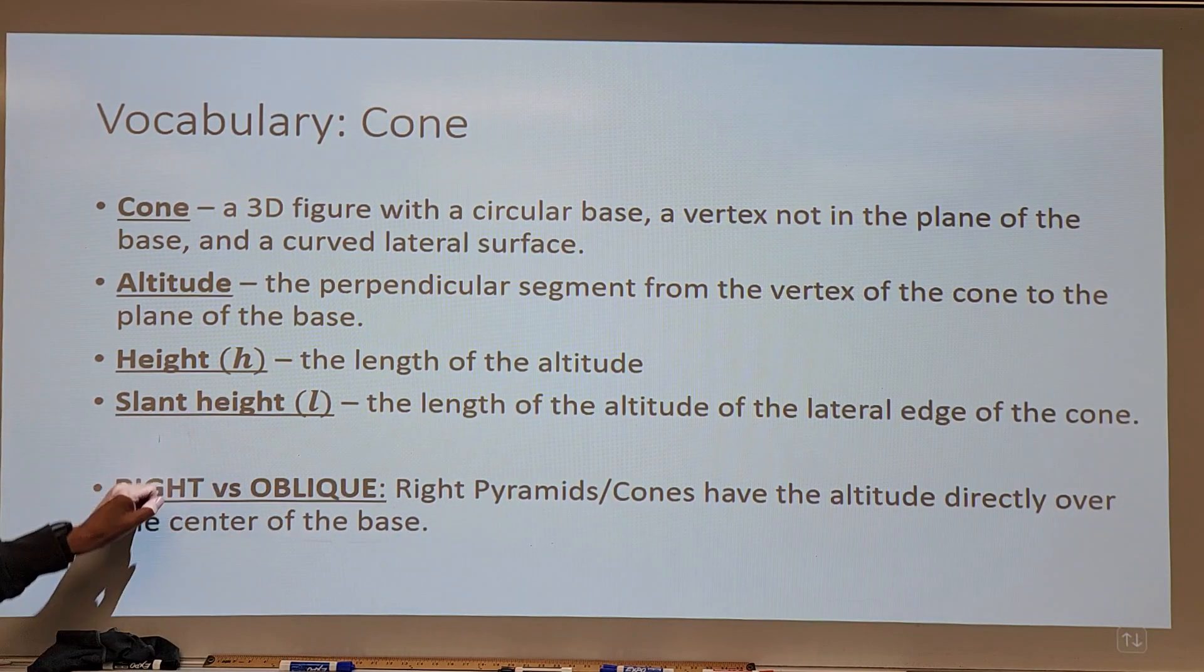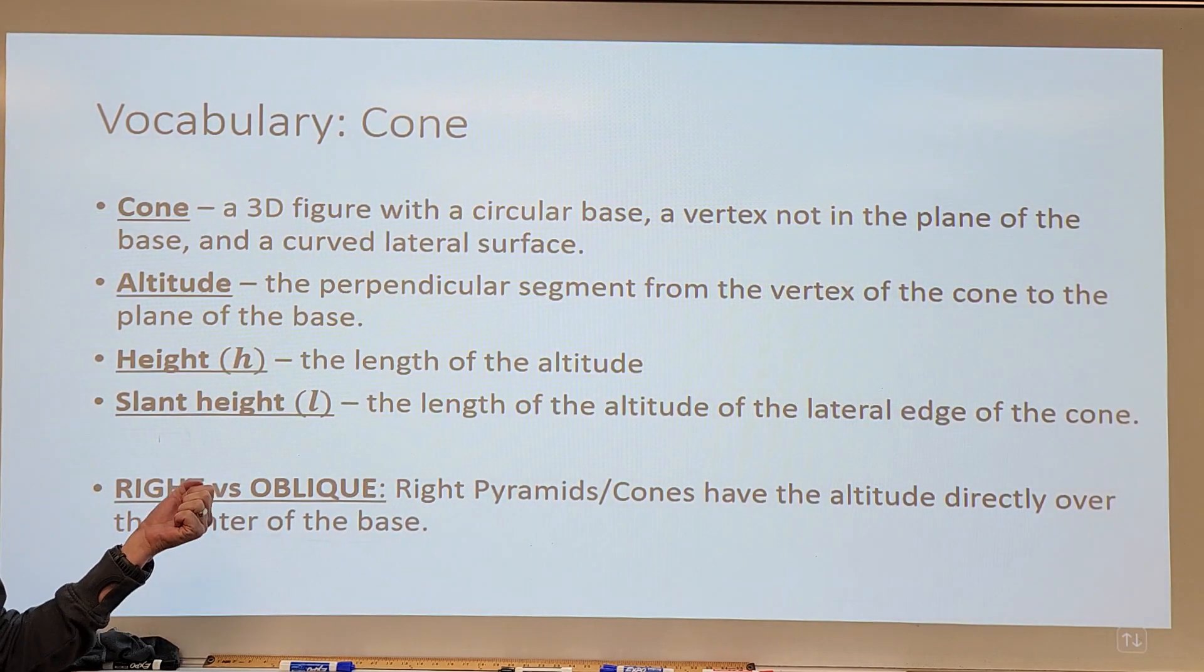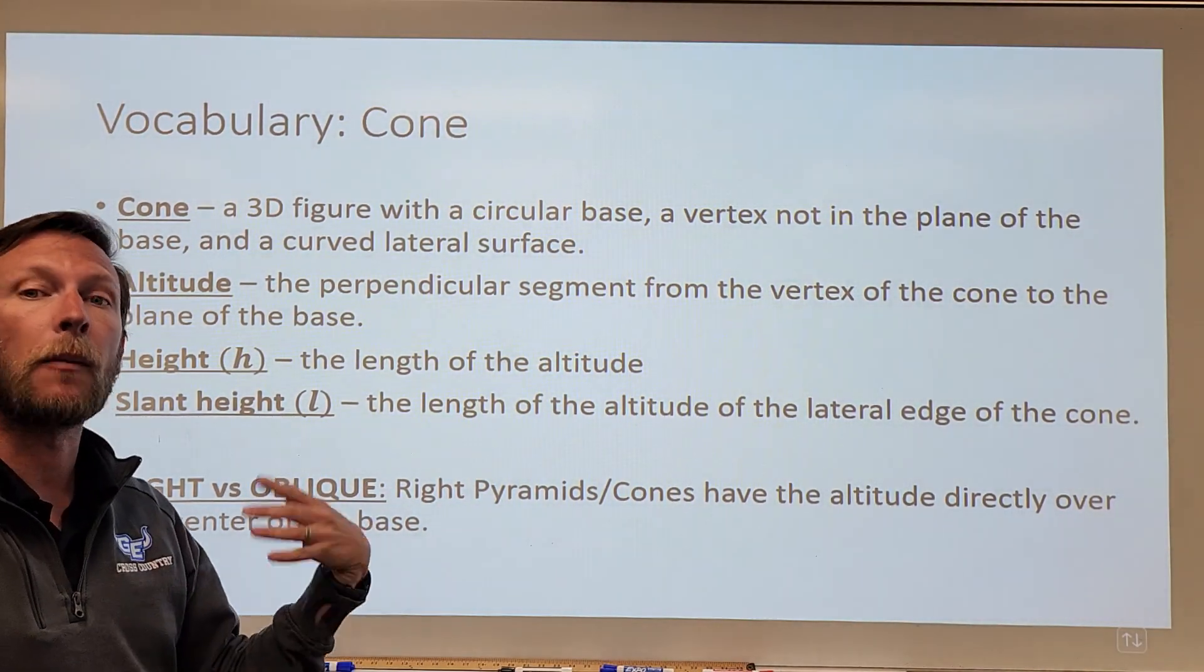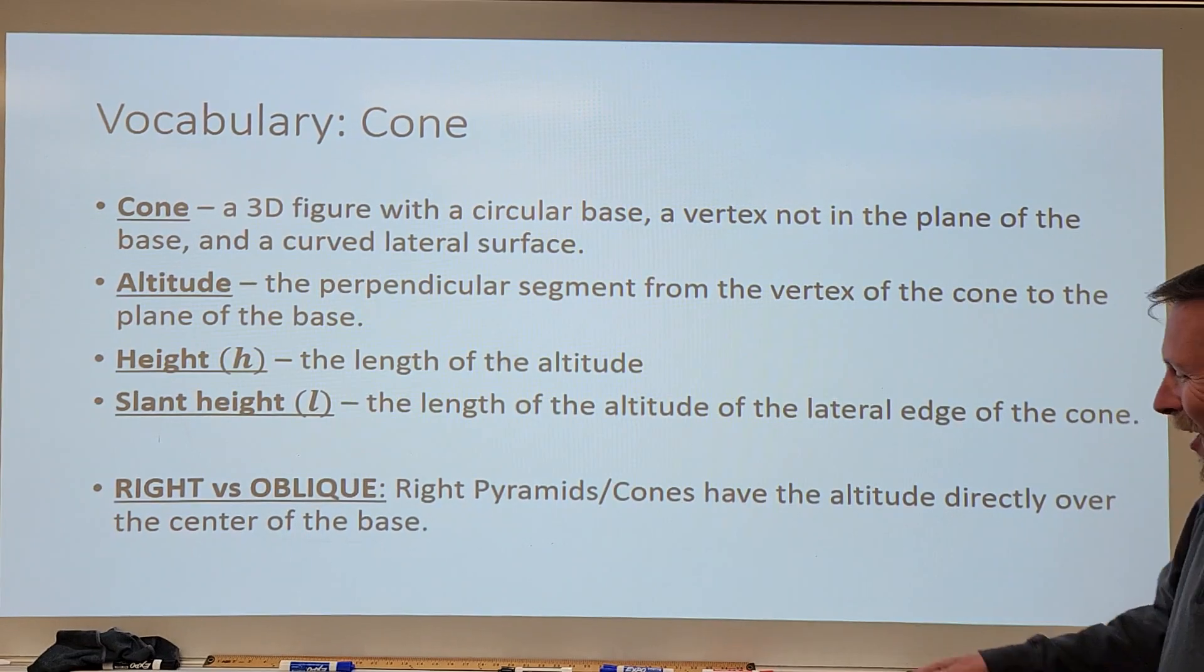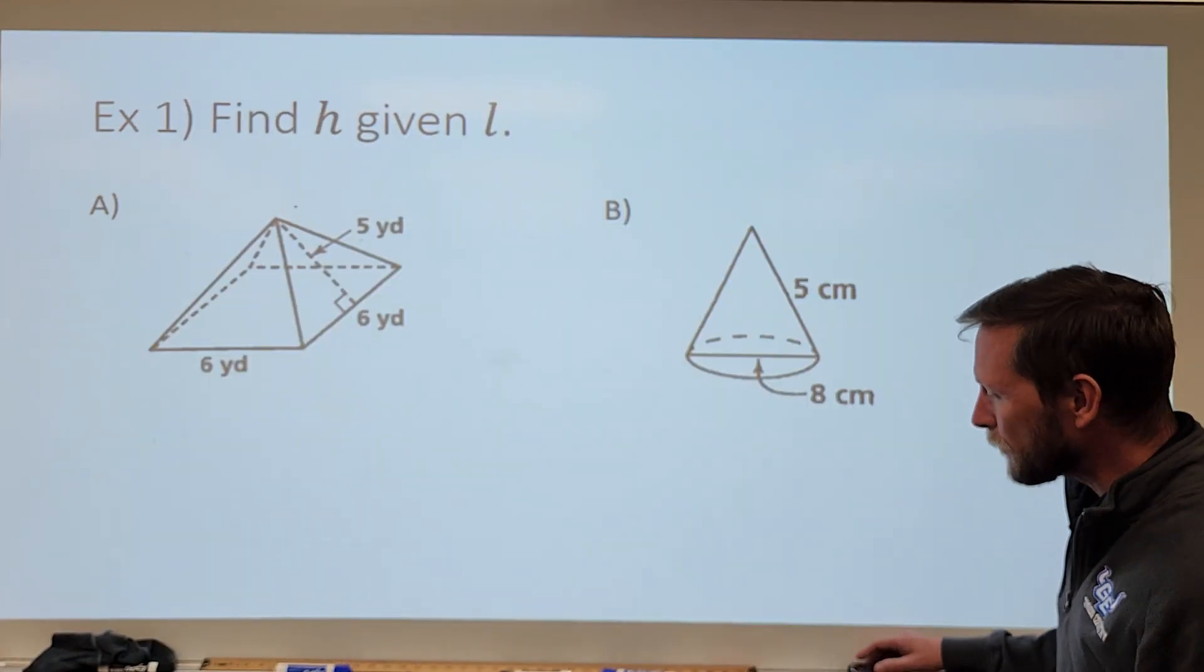Again, like I said, most of the cones and pyramids that we're dealing with are going to be right pyramids and right cones, and specifically with pyramids, most of them, again, are going to be regular pyramids, meaning that the base is a regular polygon. And we know how to find the areas of those regular polygons, that one half apothem times perimeter, or if there's some other shortcut that we can work there.